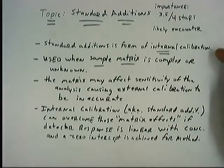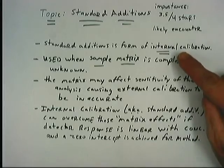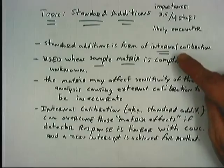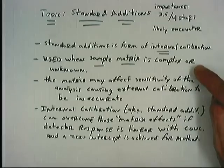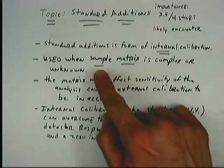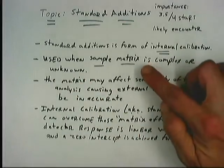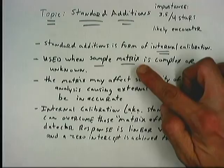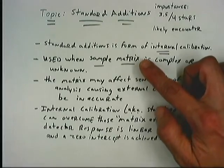Standard additions is a form of calibration, but it's internal calibration. Instead of making a calibration curve from external standards, we're going to standardize within the sample matrix itself. We're going to use this method when the sample matrix is complex or unknown. If you've forgotten what the sample matrix is, it's essentially everything else in the sample except for the analyte, the substance you're trying to measure.